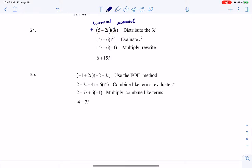Really what I need to do is distribute that 3i to the negative 2i into the positive 5. So 5 times 3i gets me 15i, negative 2i times positive 3i is negative 6i squared. We've been going with i squared is negative 1 so that's what I substituted in here.